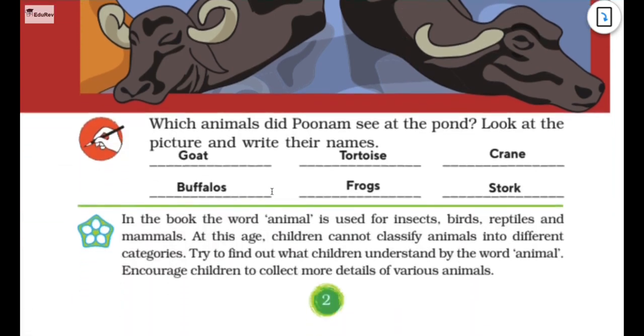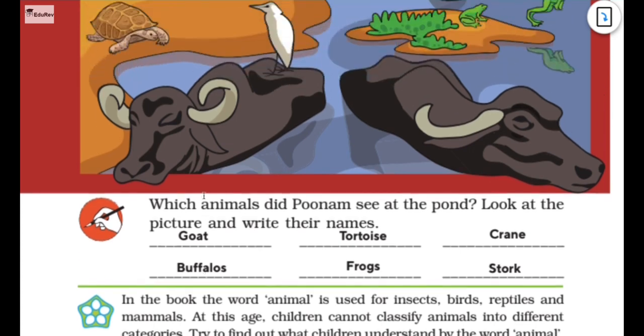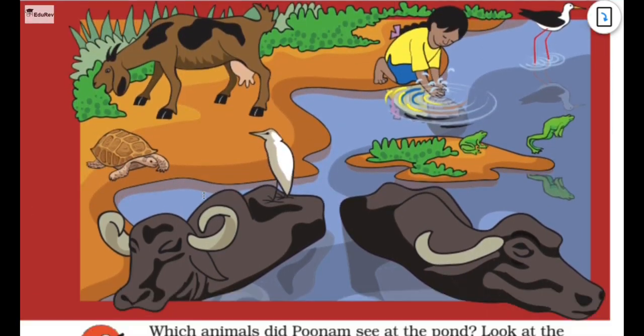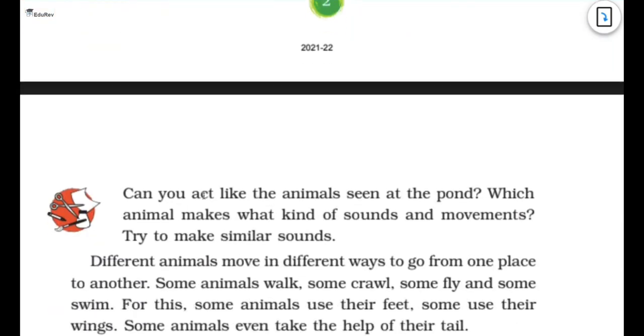Which animals did Poonam see at the pond? Look at the picture and write their names. So we saw goat, buffalo, tortoise, frogs and crane and stork. So oh my god, where's the crane? Here they have and here is a stick. So we can also see that. Let's move further.